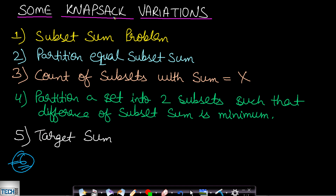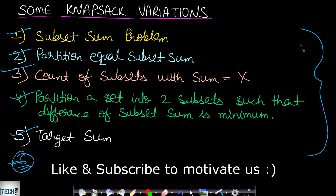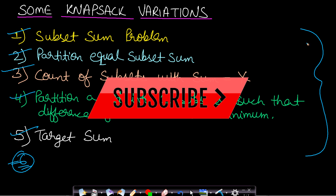There can be unlimited problem variations of knapsack. Solving parent problems helps identify and detect a knapsack problem and what algorithm to apply. The variations covered in this playlist include: subset sum, partition equal subset sum, count of subsets with sum equals x, partition set into two subsets with minimum difference of subset sums, and the target sum problem. Follow the entire playlist to develop a strong understanding of dynamic programming. Like, share, and subscribe to watch more programming videos.